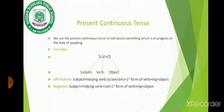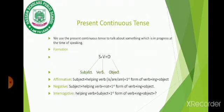Negative: subject plus helping verb, plus not, plus first form of verb, plus ing, plus object. Interrogative sentences: helping verb, plus subject, plus first form of verb, plus ing, plus object. The most important thing — at the end of a sentence, always put a question mark.